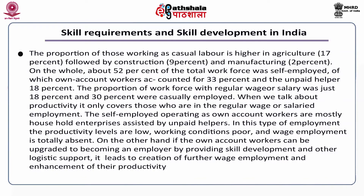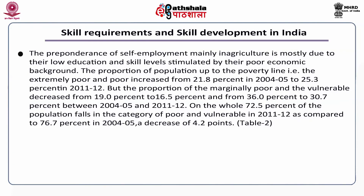When we talk about productivity, it is only covering those who are in regular wage or salaried employment. The self-employed operating as own account workers are mostly household enterprises assisted by unpaid helpers. In this type of employment, productivity levels are low, working conditions poor and wage employment is totally absent. On the other hand, if the own account worker can be upgraded to become an employer by providing skill development and logistical support, it leads to creation of further wage employment and enhancement of productivity. The predominance of self-employment, mainly in agriculture, is mostly due to low education and skill levels. The proportion of population below the poverty line increased from 21.8% in 2004-05 to around 25.3% in 2011-12.